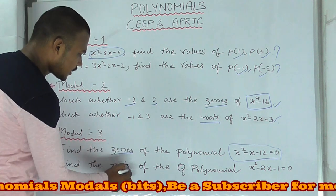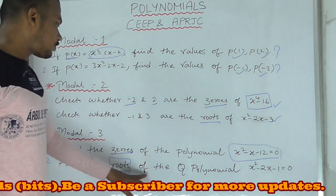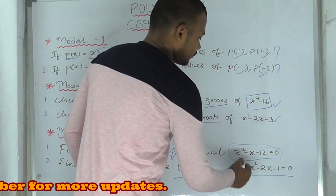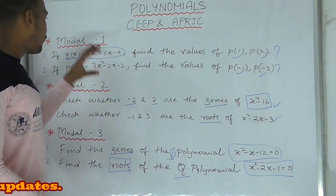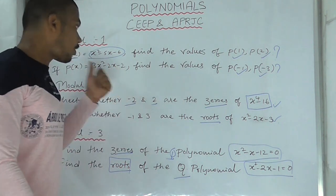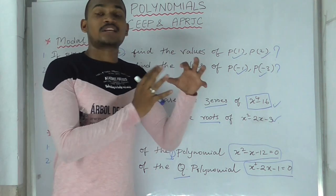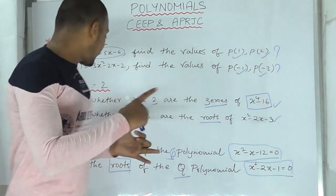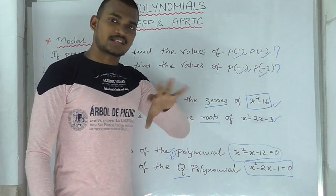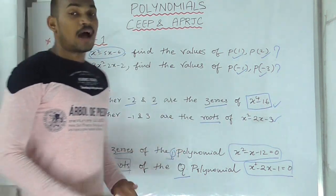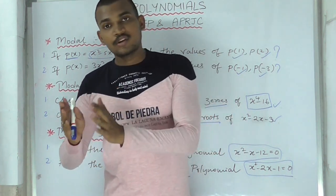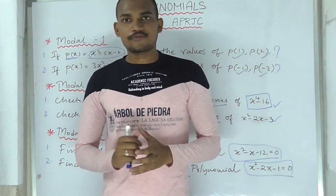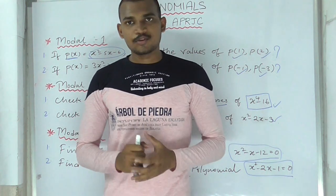Find the roots of the quadratic polynomial — this is the same model. Now, what we have understood: we have three models. First model, we substitute values. Second model, we check the roots using those values. There are two rules. Then there are zeros, and the formula for the quadratic polynomial. Next, linear polynomial and cubic methods of the quadratic polynomial.